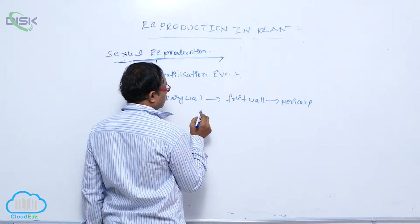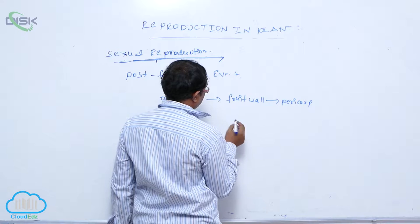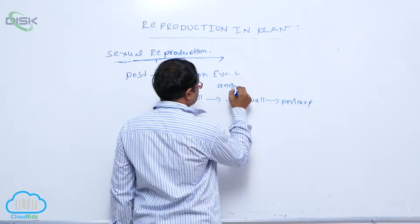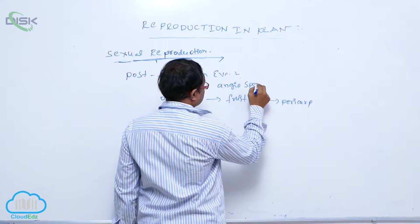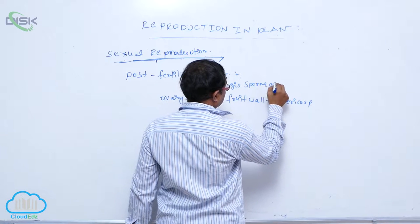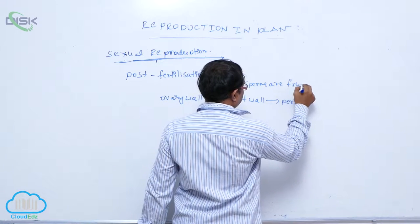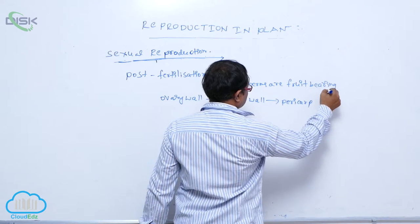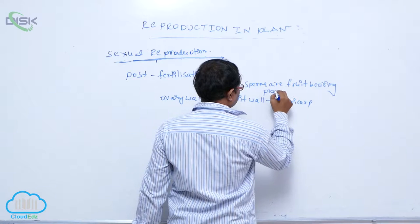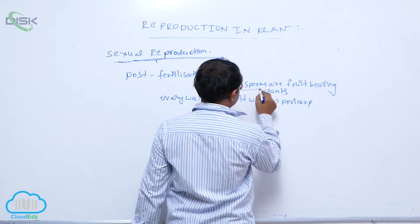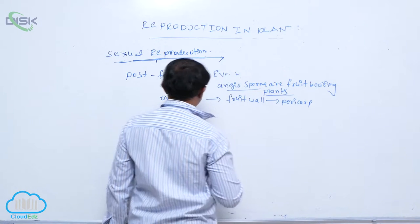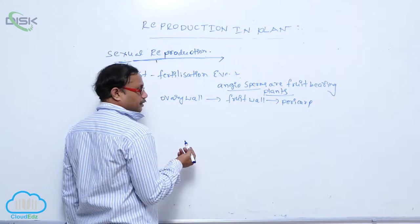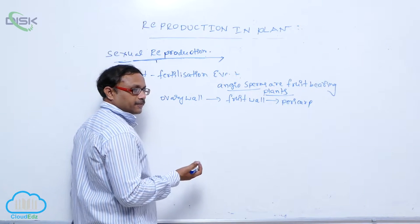The most important character of angiosperms is that angiosperms are fruit-bearing plants. After maturity, seeds are liberated from the fruit.